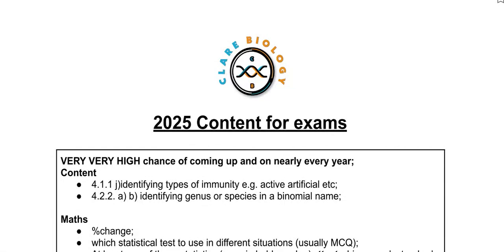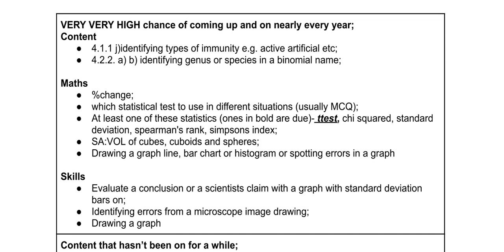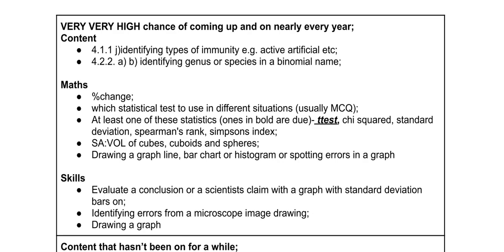Welcome biologists to this video where we're going to explain the content that is most likely going to come up in your exams. There's some stuff that hasn't been on for ages, but also some stuff that usually comes up every academic year. The stuff that comes up every academic year is in this first box. The other boxes are broken down into each exam to help you figure out what is coming up in each paper.